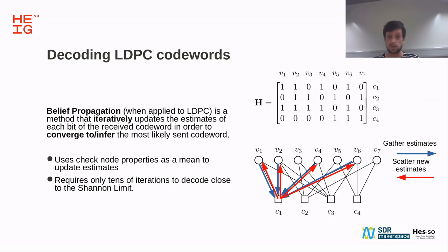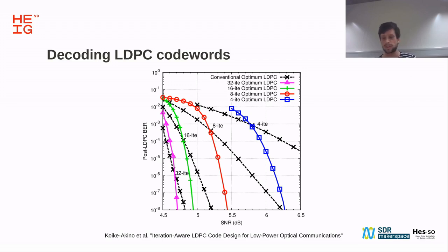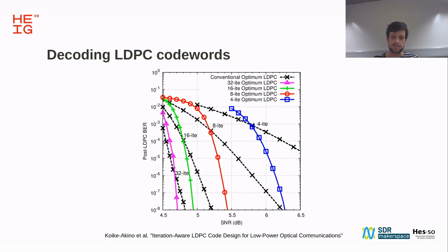With just tens of iterations, belief propagation can get close to the Shannon limit. The more iterations you perform, the lower the error floor. This has an important implication: if your decoder is really fast, you can do more iterations in the same amount of time, lowering the error floor. And if the error floor is lower, you can transmit at a lower power, which benefits power consumption.